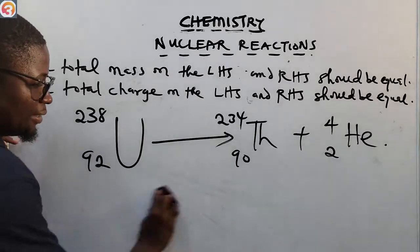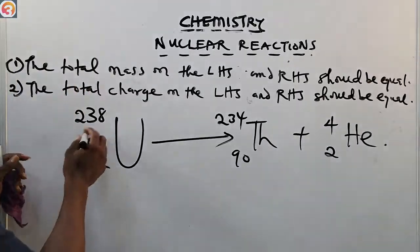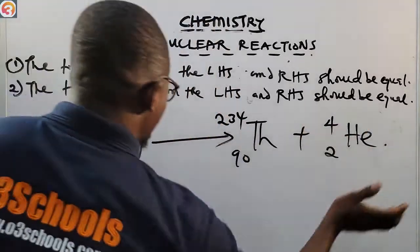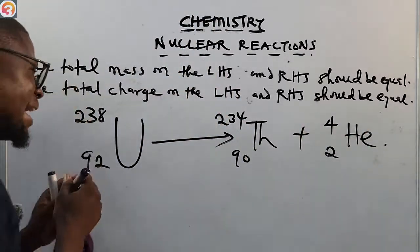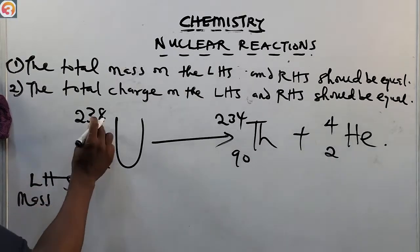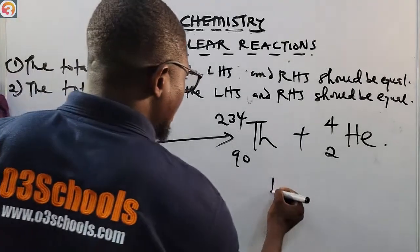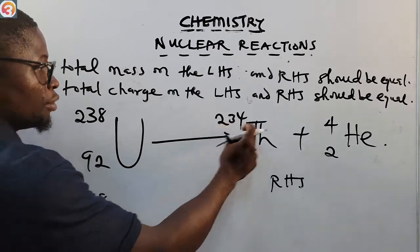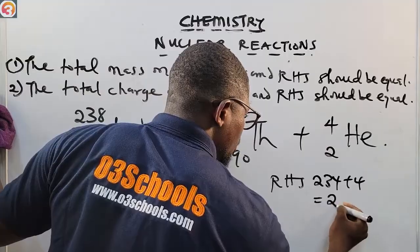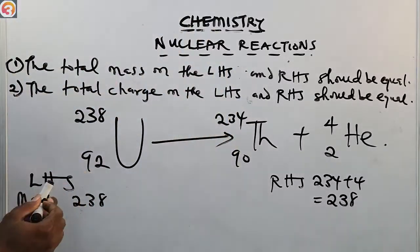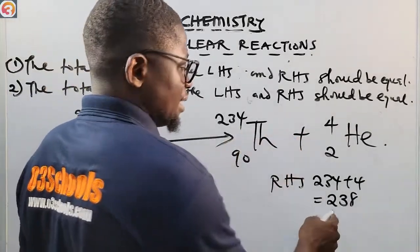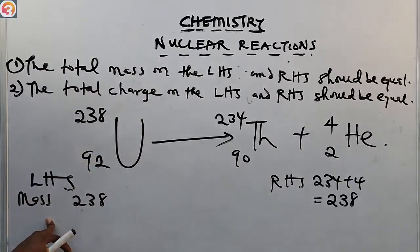The mass on the left-hand side is 238. On the right-hand side, the mass is 234 plus 4, which equals 238. So the mass on the left-hand side equals the mass on the right-hand side — that rule is satisfied.